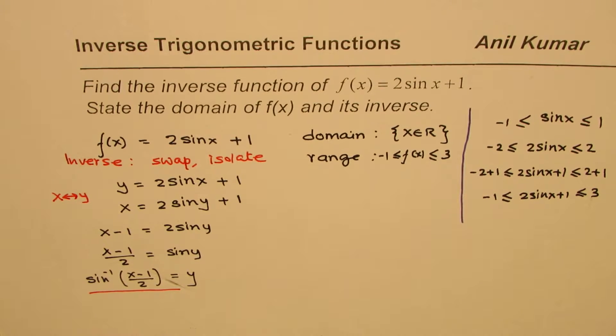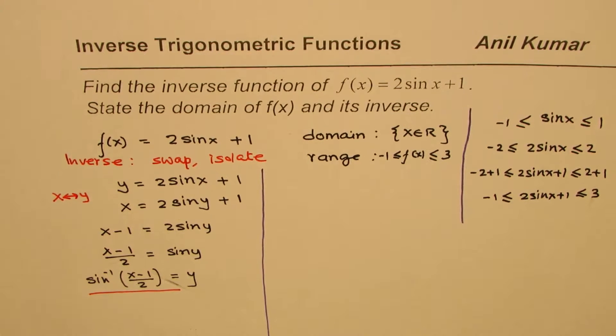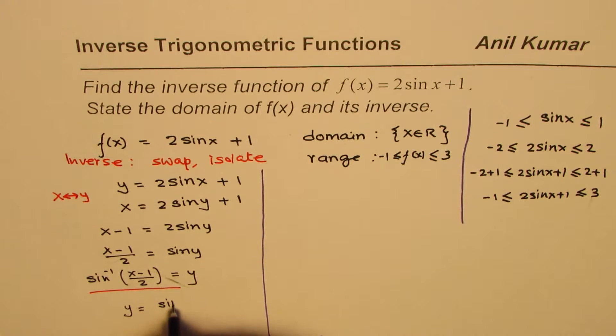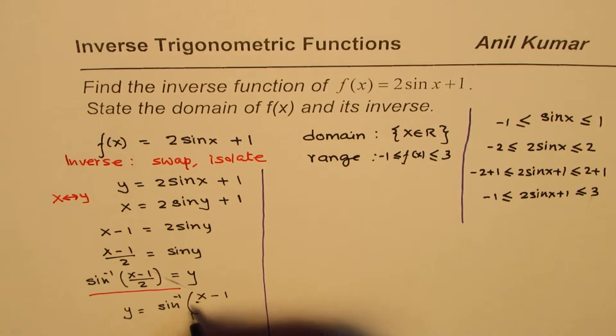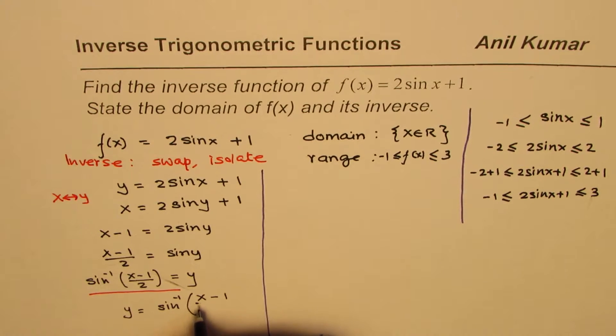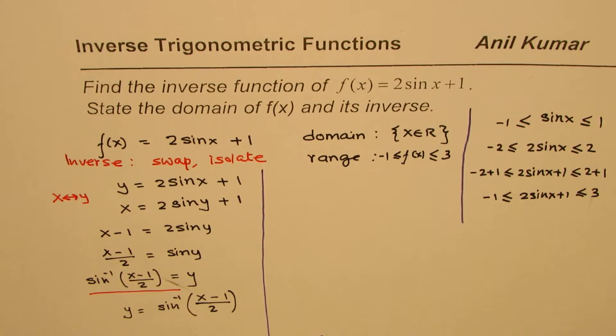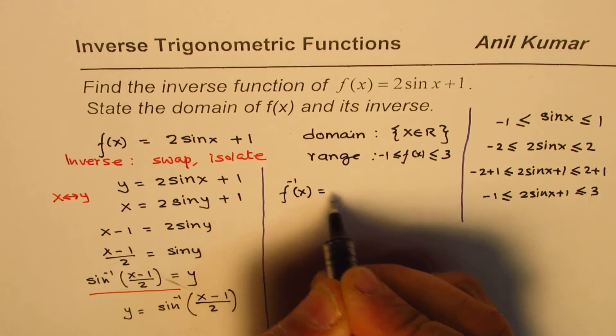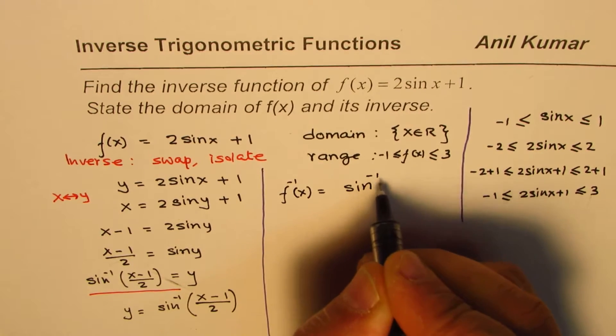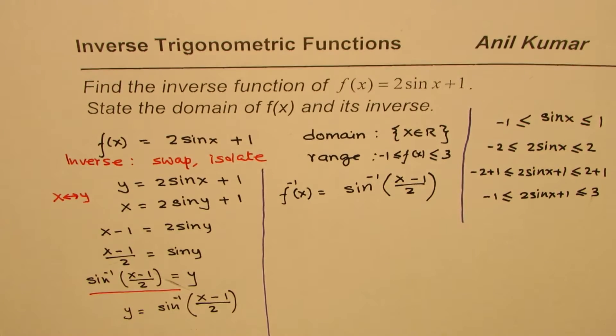Now, let's look into it in the form y equals. So, we have y = sin⁻¹((x - 1)/2). That becomes the inverse function, which you could always write as f⁻¹(x) = sin⁻¹((x - 1)/2). So, that is your inverse function.